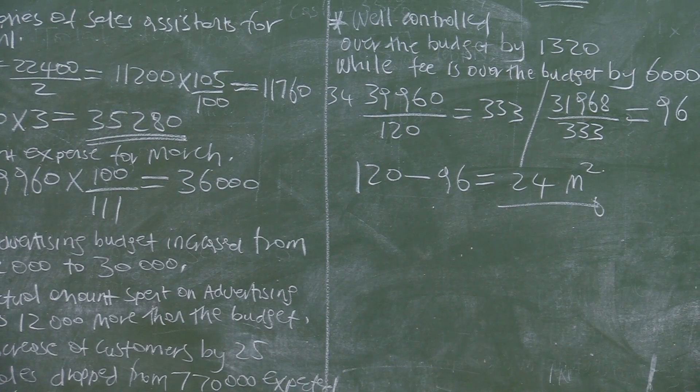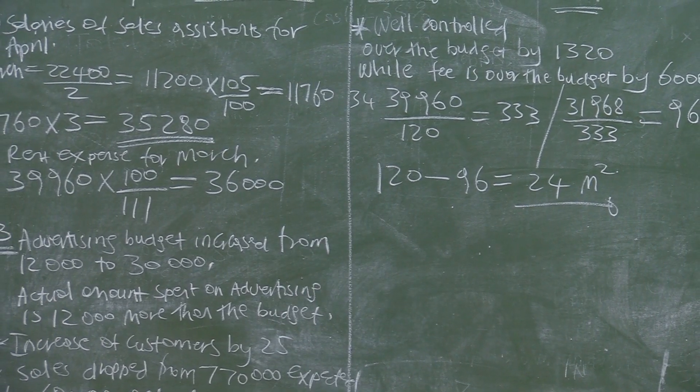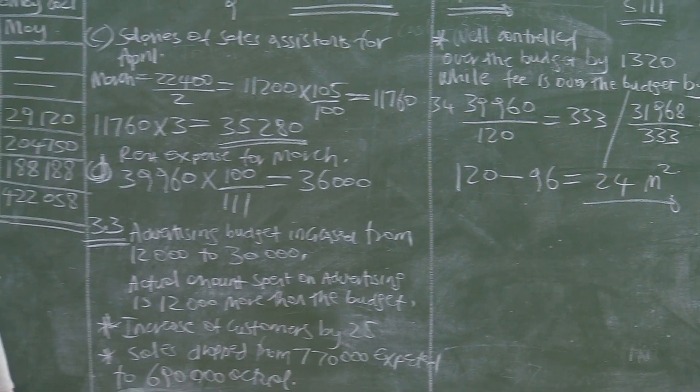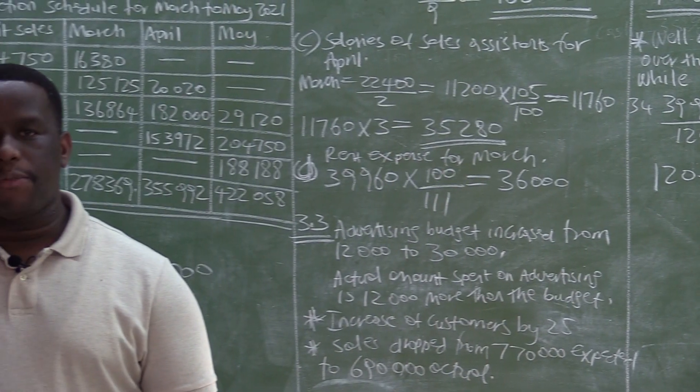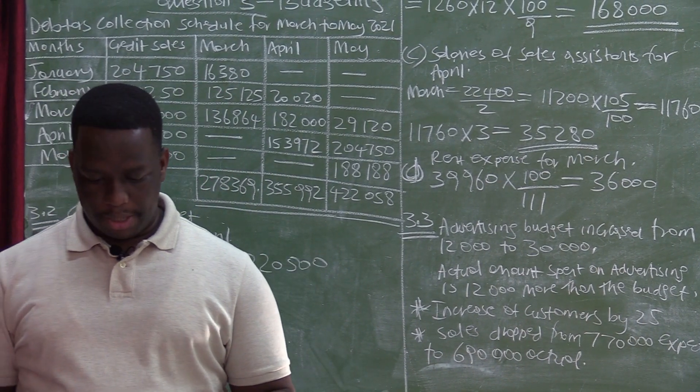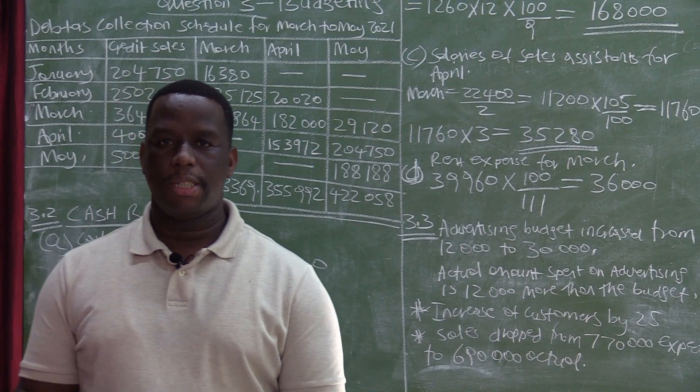So that was 3.4, which was the last question under question 3, which is budgeting. So let us pause here for now in question 3, and then just take a water break and come back to question 4 for stock valuation. Thank you.